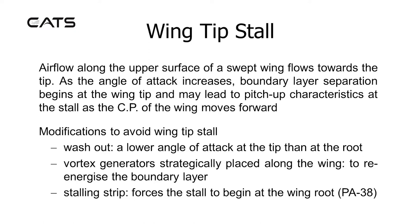Modifications to avoid wing tip stall. Wash out: there is a lower angle of attack at the tip than at the root. Vortex generators: these are strategically placed along the wing to re-energise the boundary layer. Stalling strip: this forces the stall to begin at the wing root — for example on the PA38.